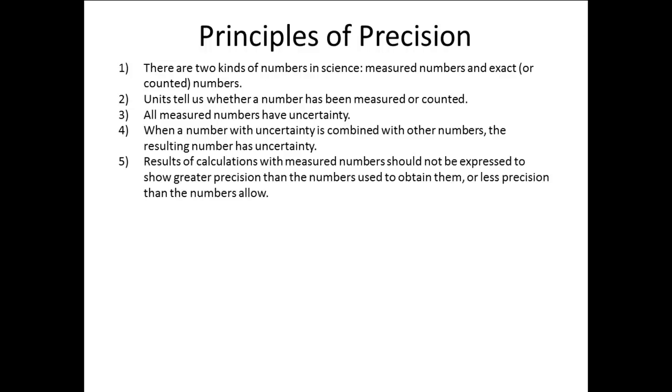5. Results of calculations with measured numbers should not be expressed to show greater precision than the numbers used to obtain them, or less precision than the numbers allow. When we report our answer to a calculation, we should report it so that it is expressed to an appropriate precision. That is, we should not report too many digits, this is the most common mistake, or too few digits, which happens occasionally.